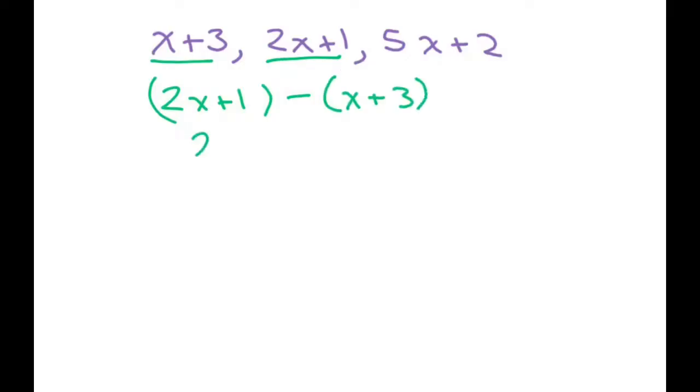So that's going to be 2x plus 1, minus x minus 3. That gives you x minus 2, and that's your common difference.